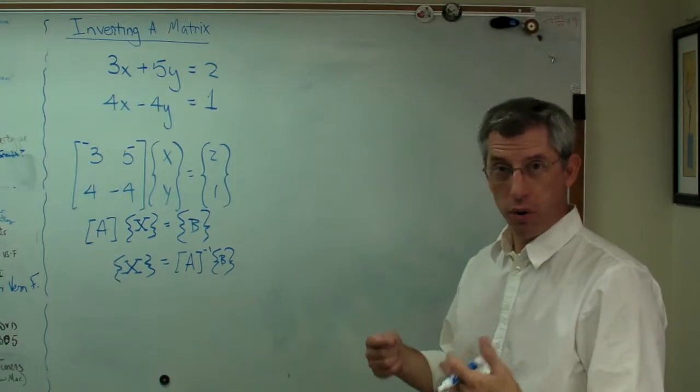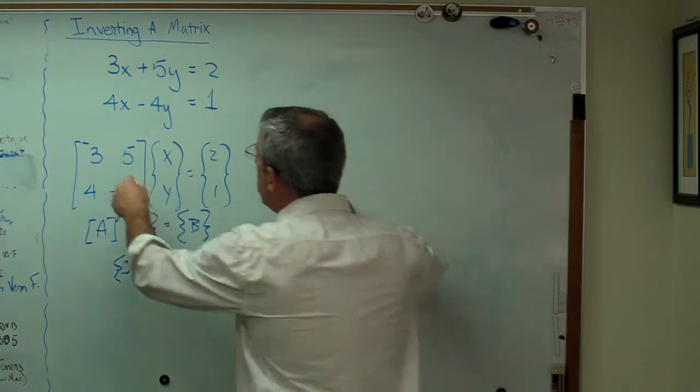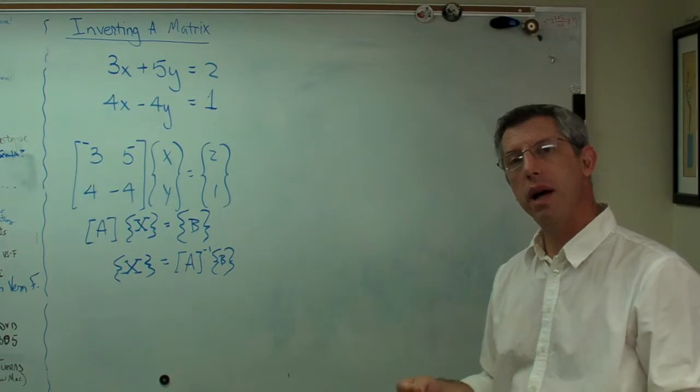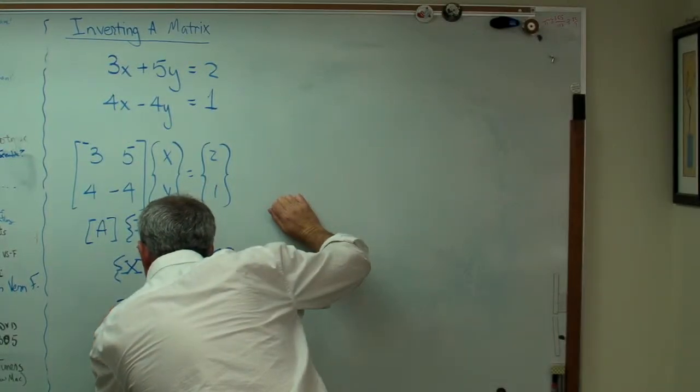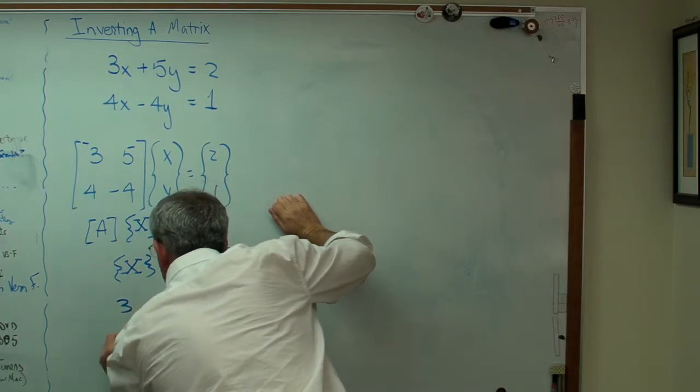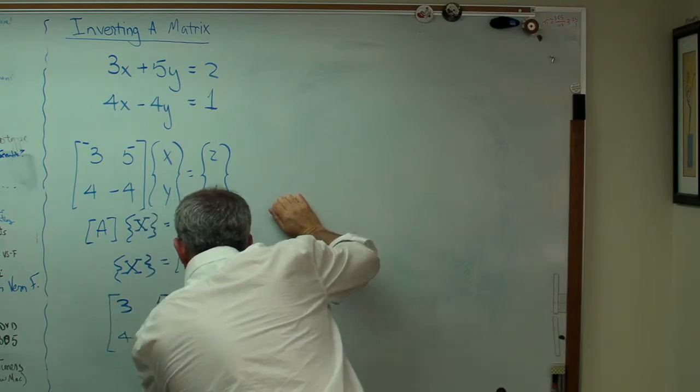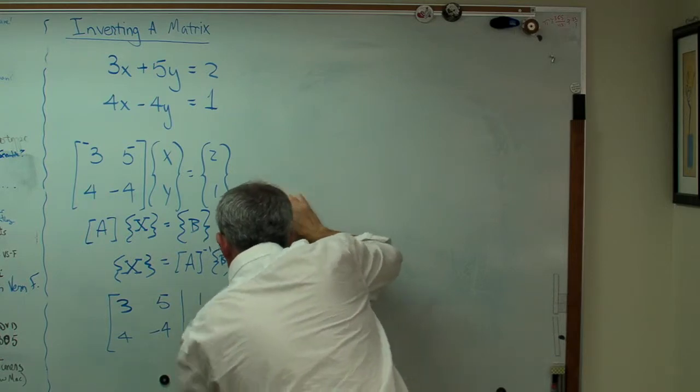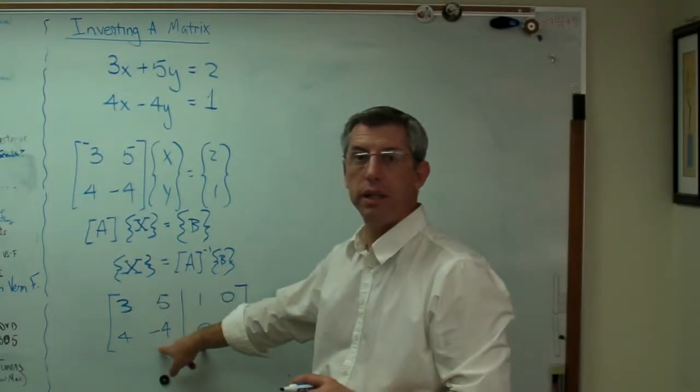Last time we talked about row operations. Row operations are all legitimate things to do. And I'm going to make one change to this matrix here, A. I'm going to perform some row operations on it. When I'm done, I'll have the inverse. So what I'm going to do here is write this out, matrix A here, with one change.